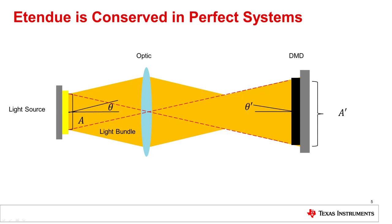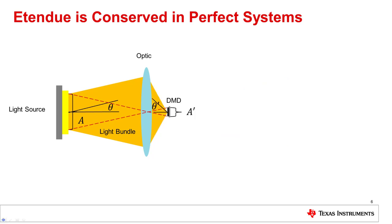The light can converge slower, resulting in a smaller half angle and a larger area than the previous case. Or the light can converge faster, resulting in a larger half angle and a smaller area. But etendu remains constant.